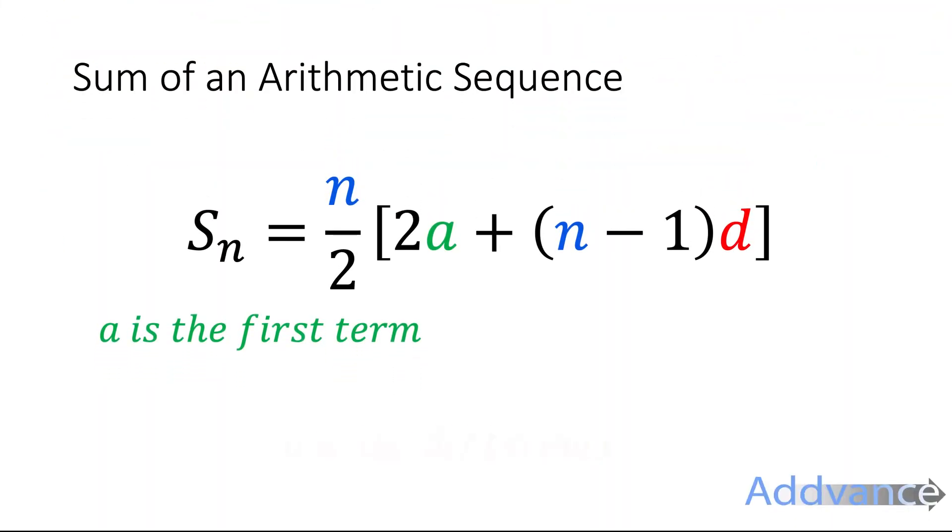In the exam you'll be given this formula in your booklet. And it says S_N is equal to N over 2 times 2A plus N minus 1D. S_N means the sum of the N terms. So for example, if it was the sum of the first 10 terms, it's like you were adding the first 10 terms of the sequence together and you would get some answer. And this formula will tell you a quick way of finding that sum.